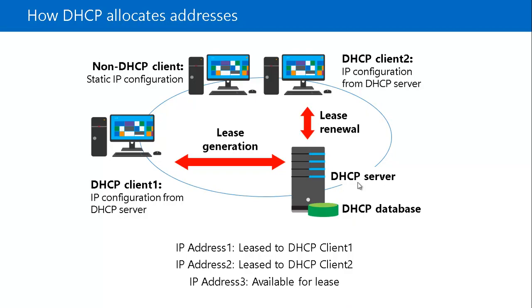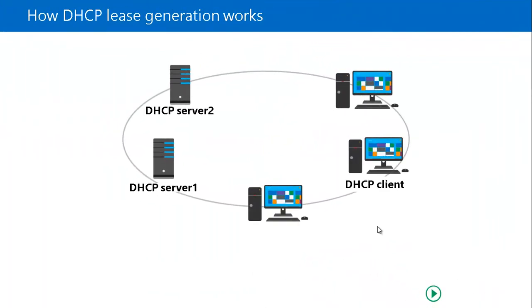Now let's see how DHCP lease generation works. DHCP uses a 4-step lease generation process to assign an IP address to a client. Understanding how each step works will help you troubleshoot problems when clients cannot obtain an IP address. This 4-step process is also called DORA.